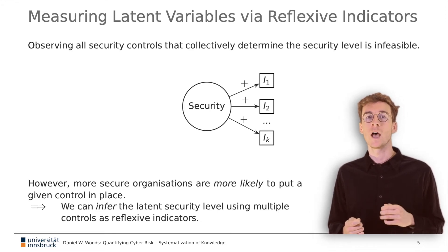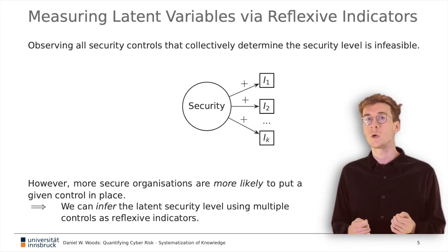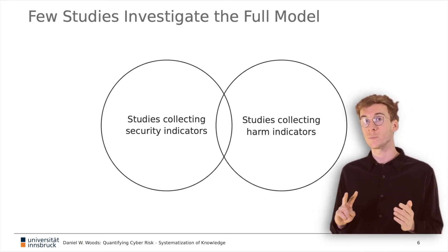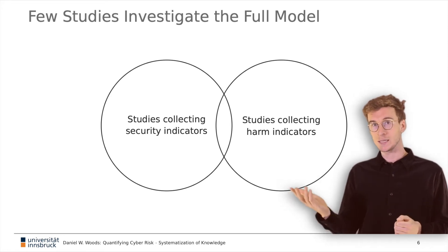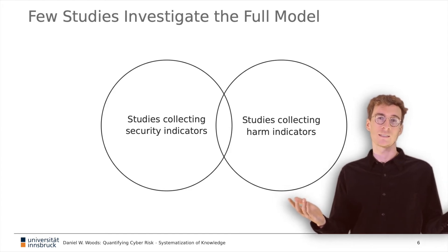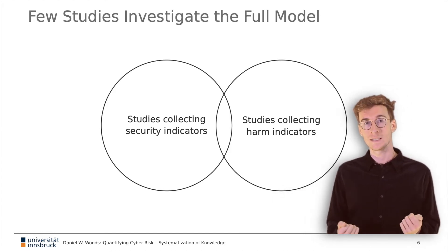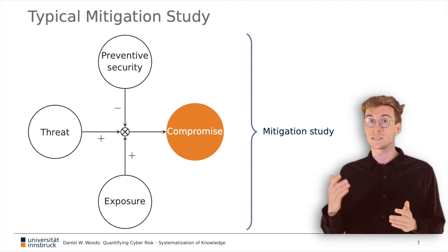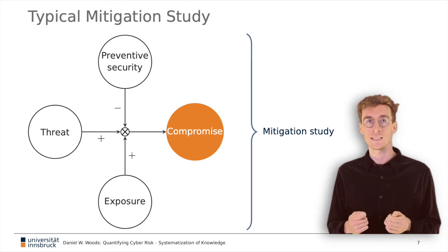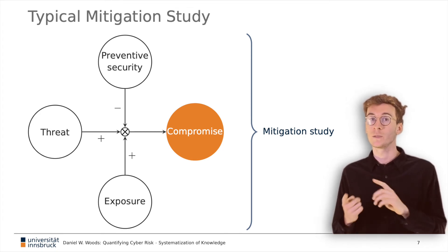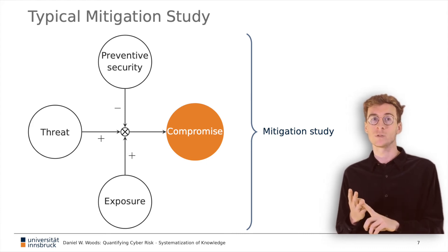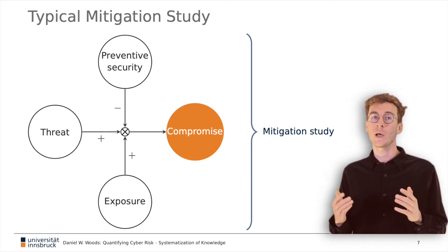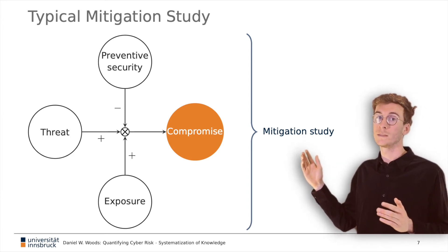This provides a pragmatic way of measuring organisational security without needing to observe every control. The second practical problem with the simple model is that very few studies collect both indicators of preventative security and also indicators of harm, let alone linking the two statistically. Mitigation studies focus on preventative security, which covers interventions like patch management. Typical studies of preventative security link it to indicators of compromise like botnet infections, compromised web servers, or whether a data breach occurs. But this ignores harm outcomes like the dollar cost of a cyber incident. This is why, in this model, we have replaced the harm variable with a compromise variable.